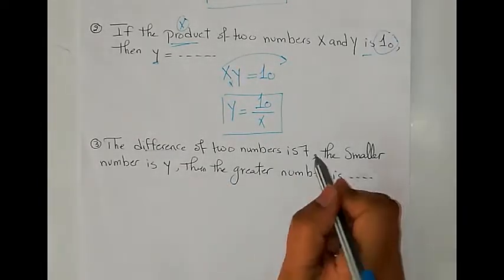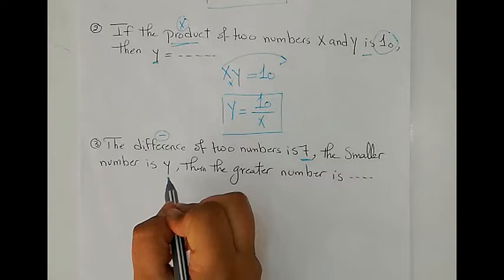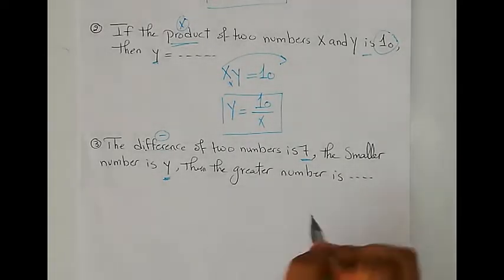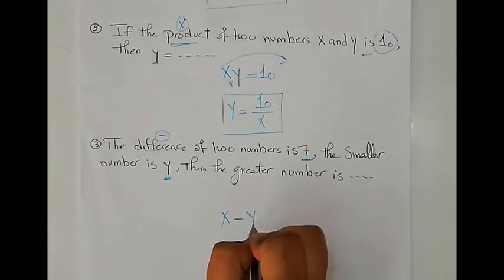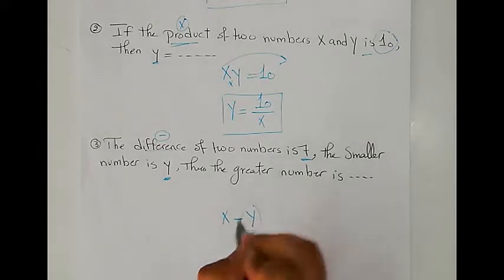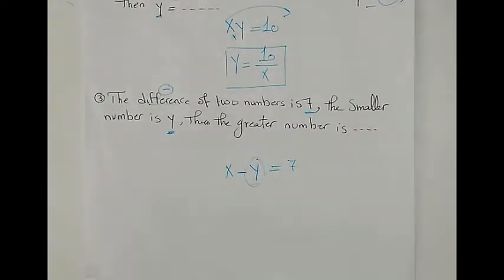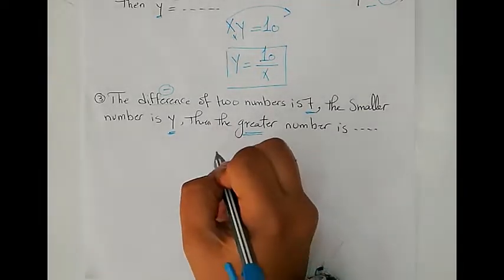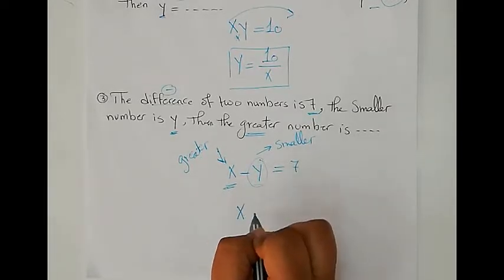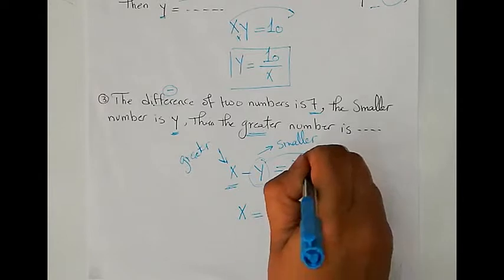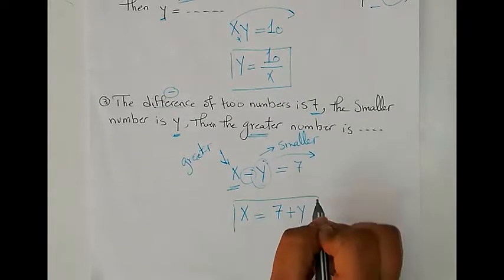Question three: the difference between two numbers is 7. Difference means minus. The smaller number is Y. When we subtract, we write the bigger number first and subtract the smaller number from it, so we write X minus Y equals 7. We need the greater number X. To get the value of X, we move Y to the other side with the inverse operation. Since the sign is minus, the inverse is plus. So X equals 7 plus Y.